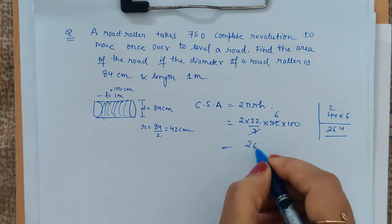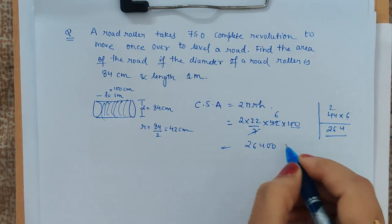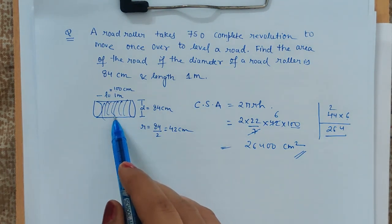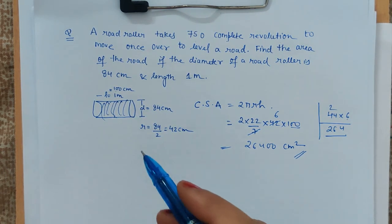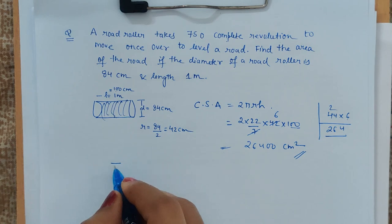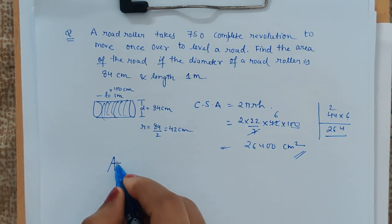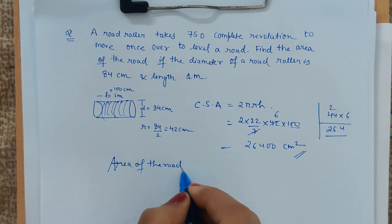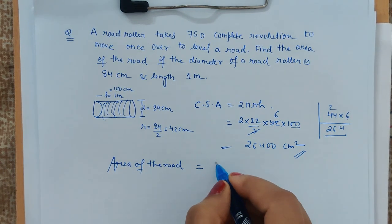26,400 centimeter square is the curved surface area of the road roller when it revolves itself one time. So the total area of the road would be nothing but the curved surface area of the road roller into number of times it is revolved.